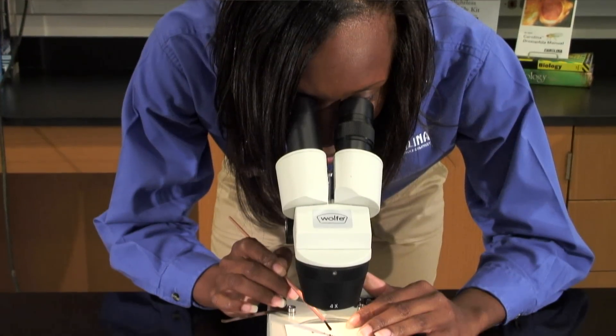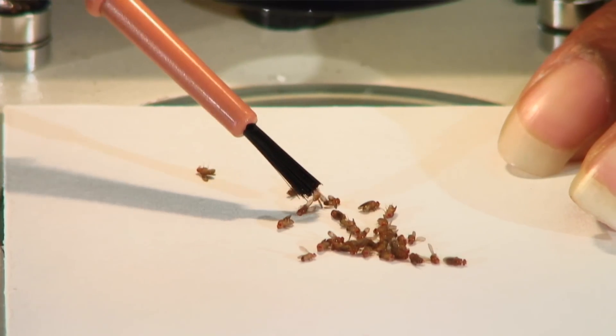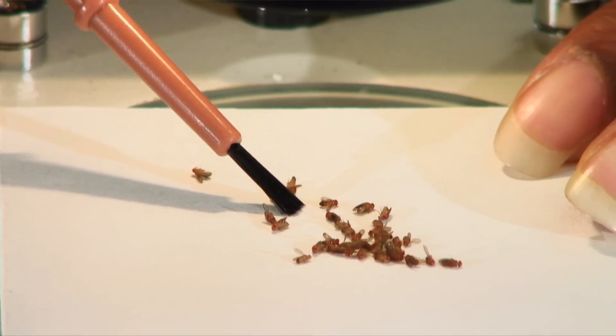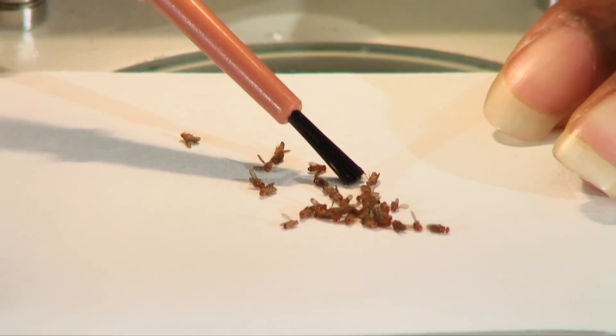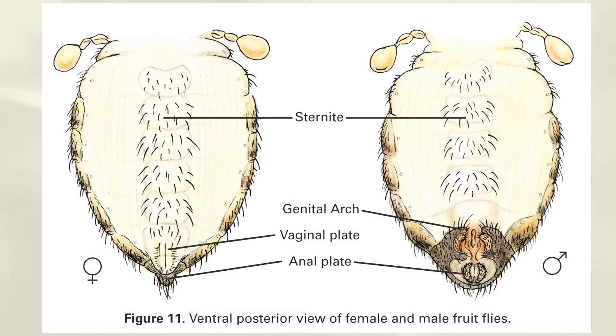Using a fine brush, sort the flies into groups of males and females. In general, the posterior part of the abdomen is much darker and more rounded in males than in females. Also, females usually are larger than males.